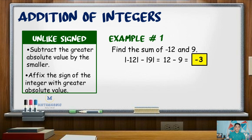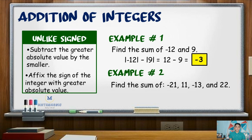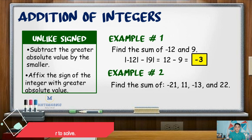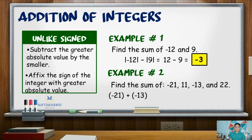For another example, find the sum of negative 21, 11, negative 13, and 22. In this example, we will use both rules. We add first the integers with like signs — those are negative 21 and negative 13 — giving us a sum of negative 34.